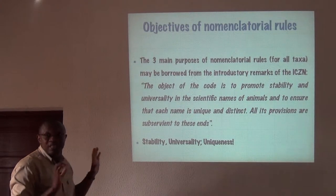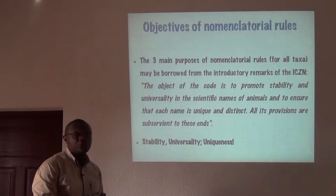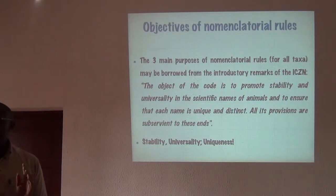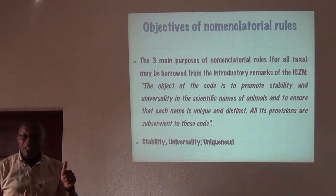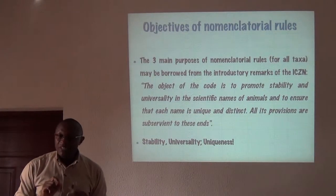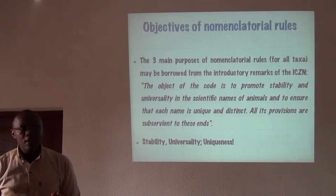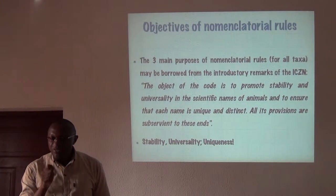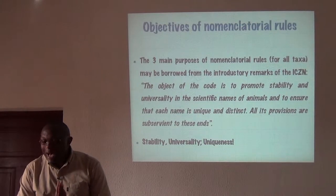What are the objectives of nomenclatural rules? The three main purposes of nomenclatural rules — essentially for all taxa — may be borrowed from the introductory remarks of the International Code of Zoological Nomenclature, which states that the object of the Code is to promote stability and universality in the scientific names of animals and to ensure that each name is unique and distinct. There are three key words: stability, universality, and uniqueness.